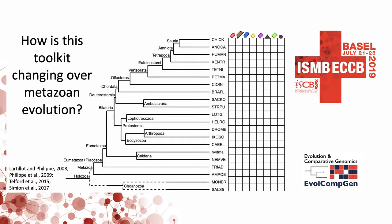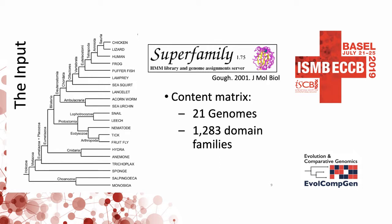In this work, we were interested in investigating the evolution of the domain toolkit encoded in metazoan genomes. Here we have the species tree, with two out-group choanoflagellate species as well as early branching metazoans such as the sponge and jellyfish, while at the top we have the very familiar vertebrate species. We also need a table containing the genomic domain content, which we obtained using the Superfamily database. For this metazoan species tree, the table has 21 rows and approximately 1,300 columns.